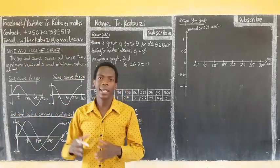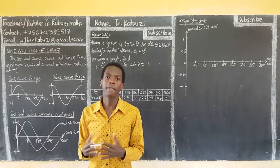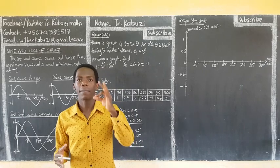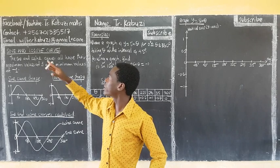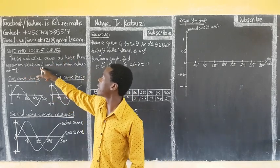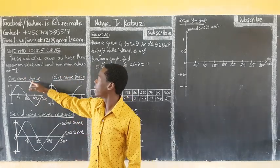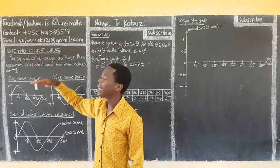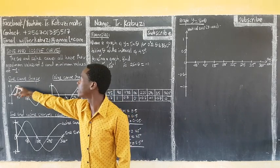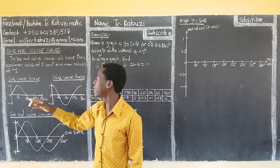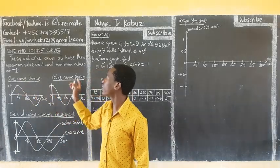Okay, now members, we are going to see the sine and the cosine curves — how we handle these functions if you are given some questions related to them. Starting with: the sine and the cosine curves all have their maximum values at 1 and their minimum values at negative 1. We have the sine curve shape and the cosine curve shape.